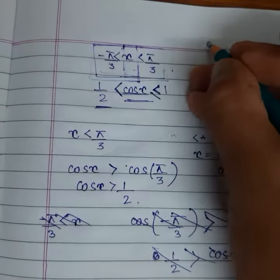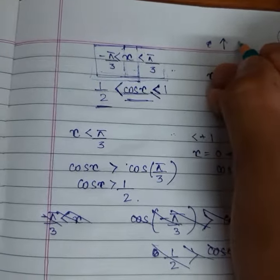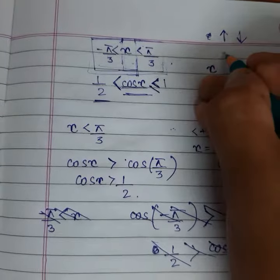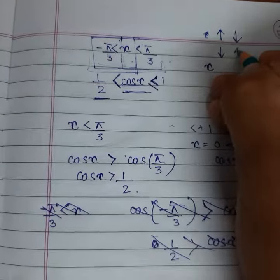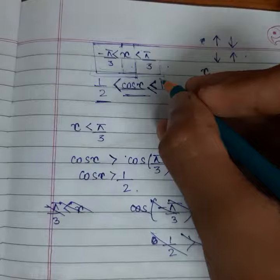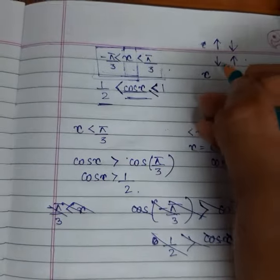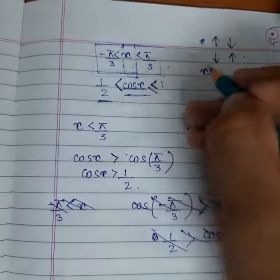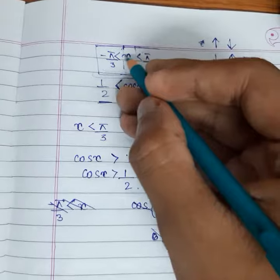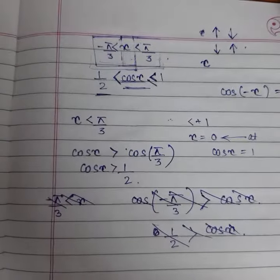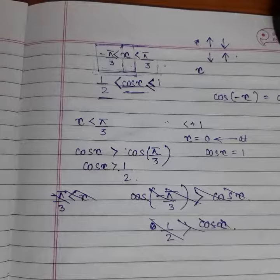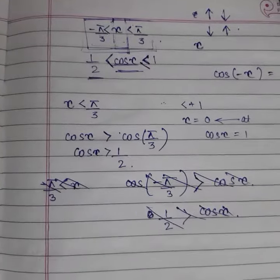Because as x increases, cos x value will decrease, and as x decreases, cos x value will increase. So to find out the maximum value of cos x, we need to find out the minimum value of x, which we found out to be 0. And why not minus π by 3? Because minus π by 3 and π by 3 will hold the same meaning in terms of value.